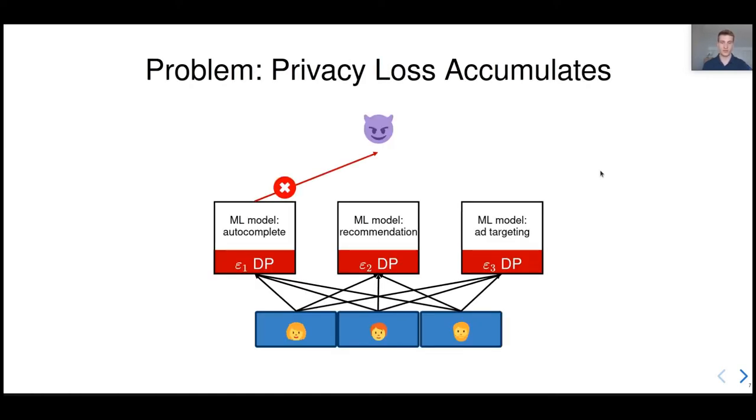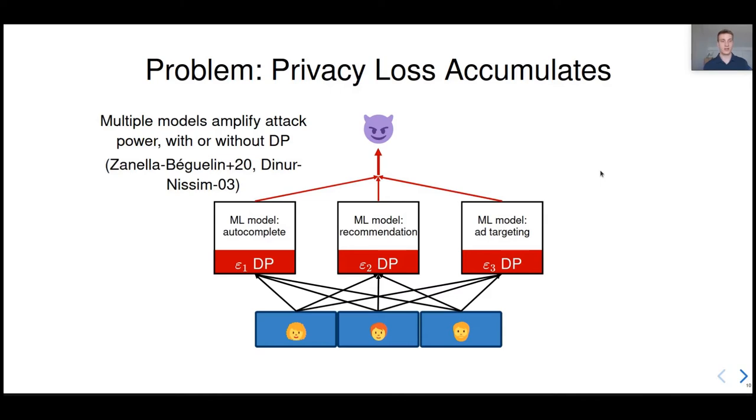So we have this tool, differential privacy, that we can use to protect individual models. If you are training the autocomplete model with differential privacy, with a given parameter epsilon1, an adversary can't extract too much information from that model only. And the other models are protected as well, when we consider them separately. However, in aggregate, an adversary can still recover a lot of information. This is because privacy loss accumulates. It means that releasing multiple models trained on the same data amplifies the attack surface, even if you are using differential privacy for individual models.